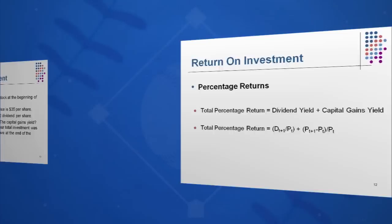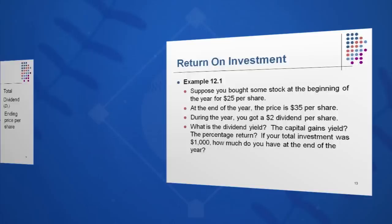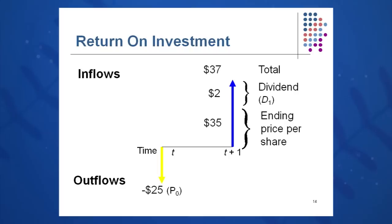Let's look at an example on return on investment. Suppose you bought some stock at the beginning of the year for $25 per share. The stock went up to $35 per share by the end of the year. In addition you got a $2 dividend per share. What's the dividend yield, capital gains yield, and total percentage return? And if you invested $1,000, how much do you have at the end of the year? We draw a little map of this showing the price going from $25 to $35 with the $2 dividend.